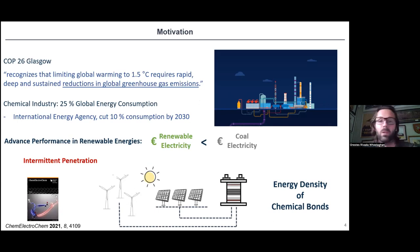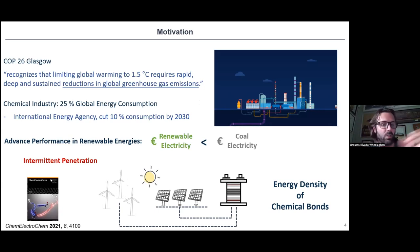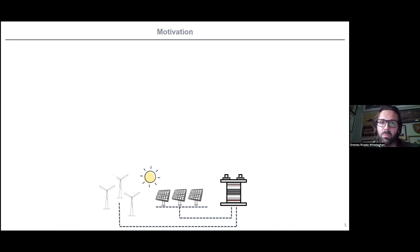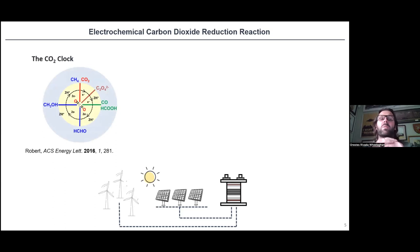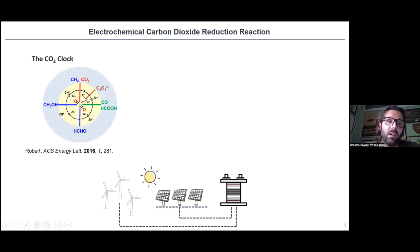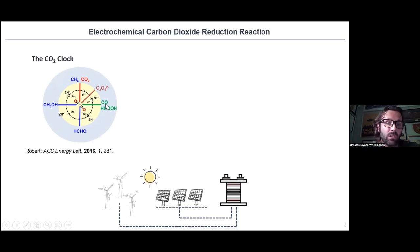We know about lithium batteries, and now in Europe there's a lot going on with green hydrogen. But we thought maybe a better approach would be electrochemical carbon dioxide reduction. If you see the transformation of carbon dioxide as a CO2 clock, by adding electrons and protons you can transform CO2 into oxalate, carbon monoxide, formic acid, formaldehyde, methanol, and methane.